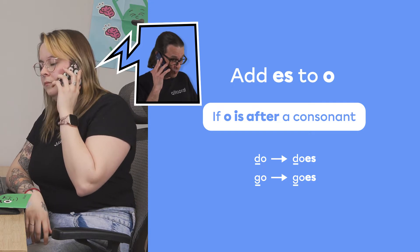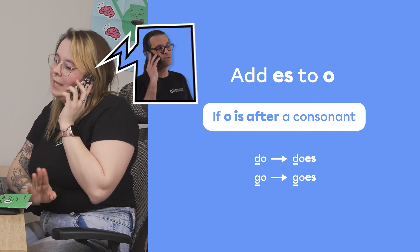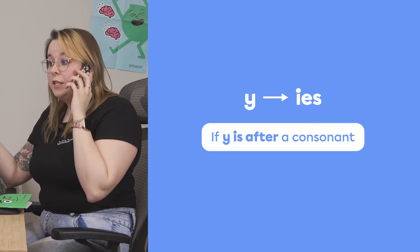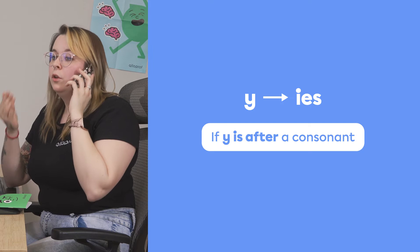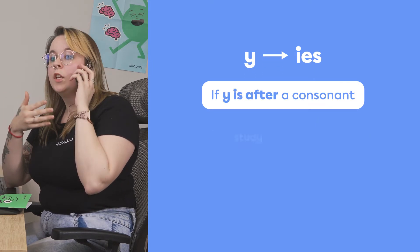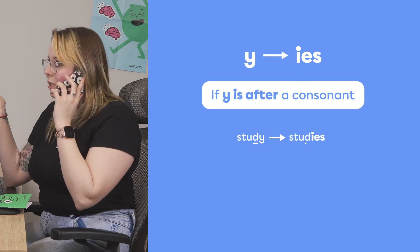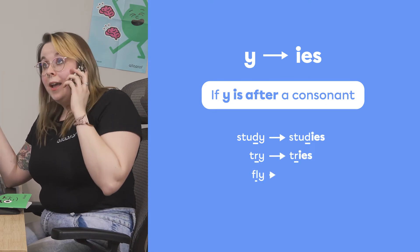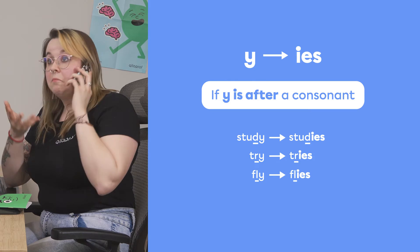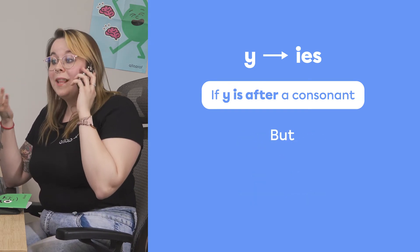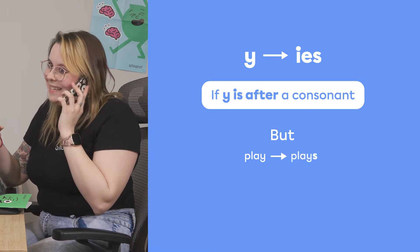For the letter -y, like with verbs ending in -o, you must check if the letter before the -y is a consonant. If so, you change the -y to -ies. 'Study' becomes 'studies,' 'try' becomes 'tries,' 'fly' becomes 'flies,' 'carry' becomes 'carries.'